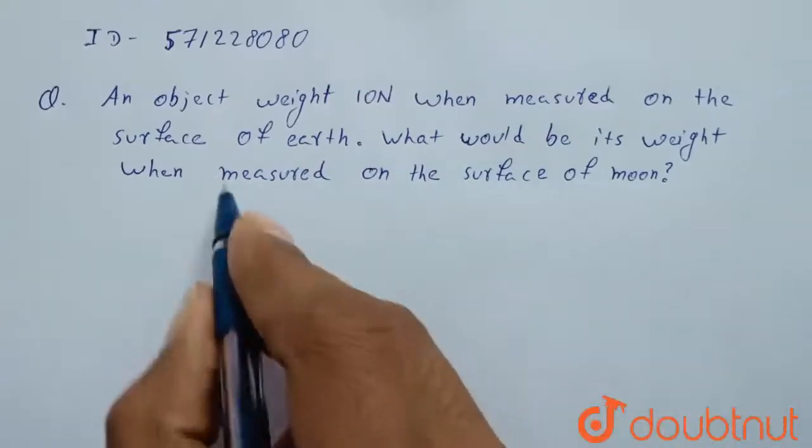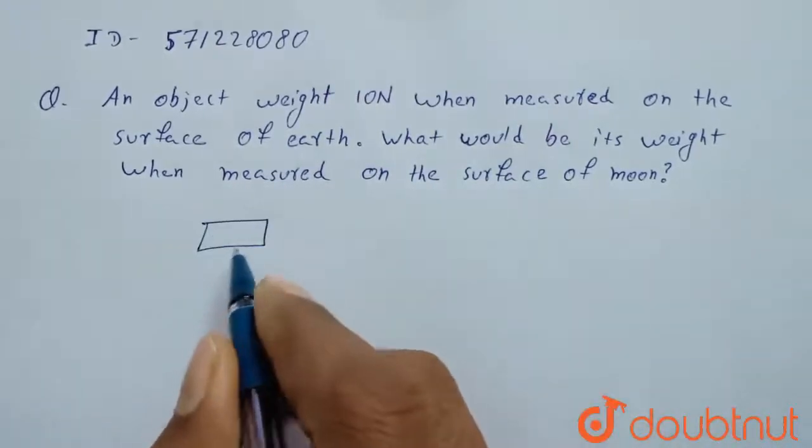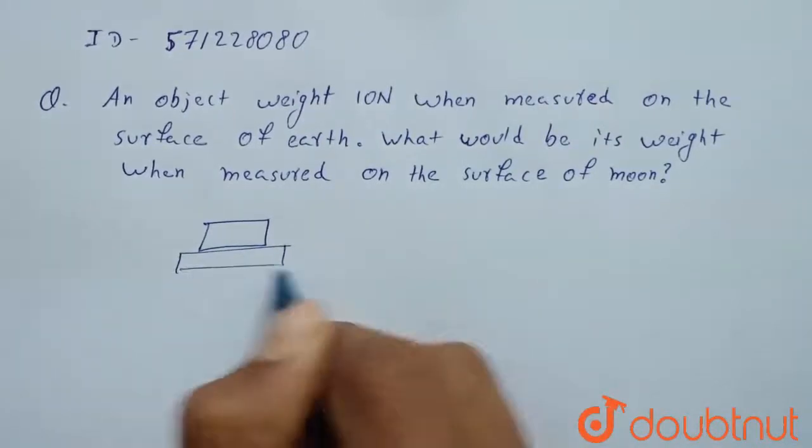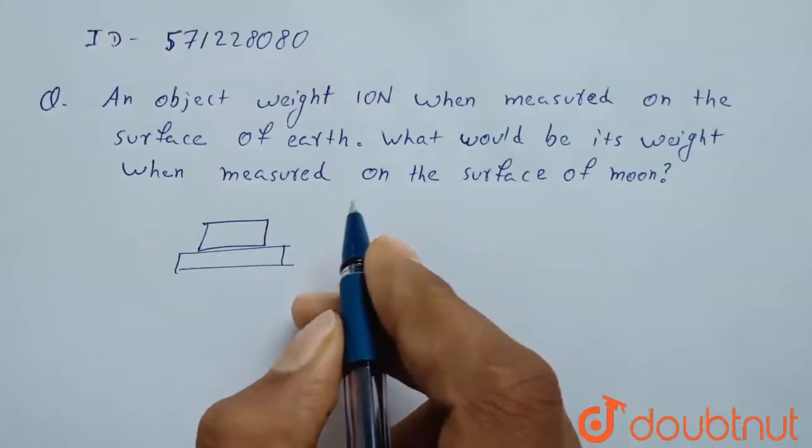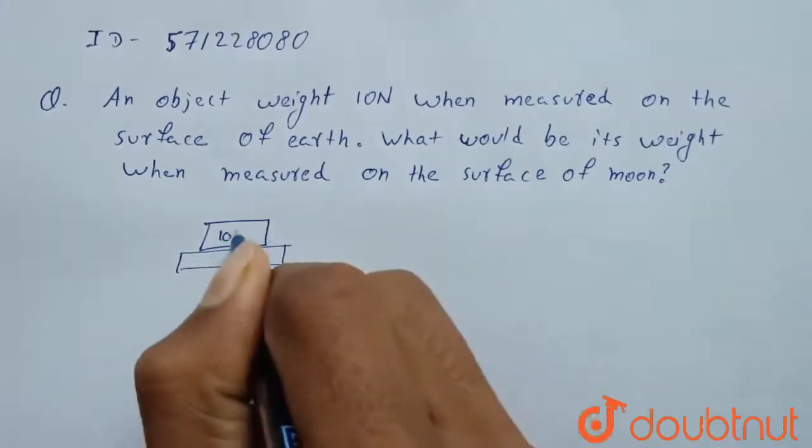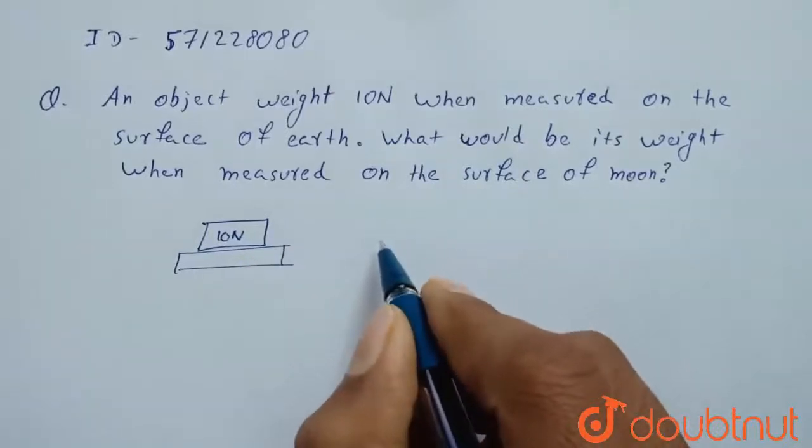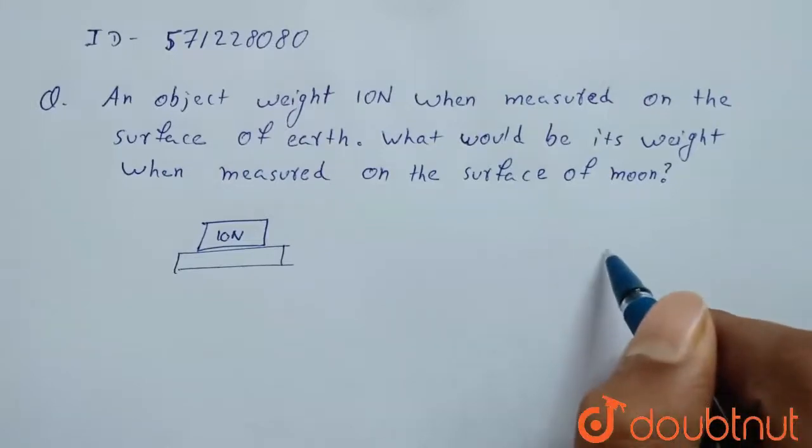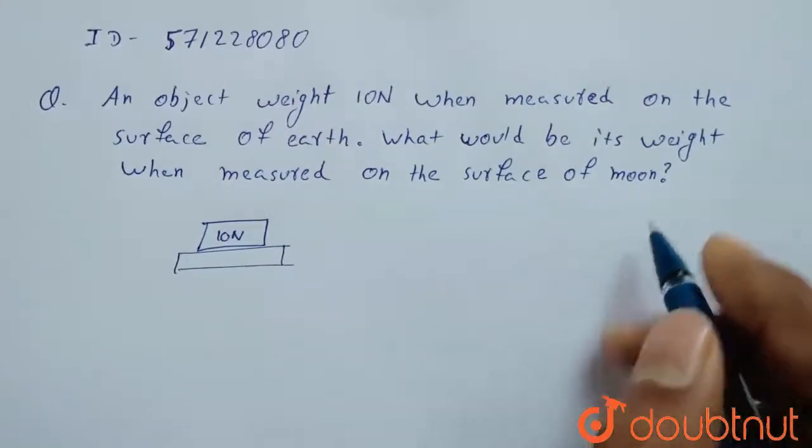So we have an object. When we measure it on earth, its weight is coming out to be 10 Newton. Okay. So we have to find what will be its weight when we measure it on moon.